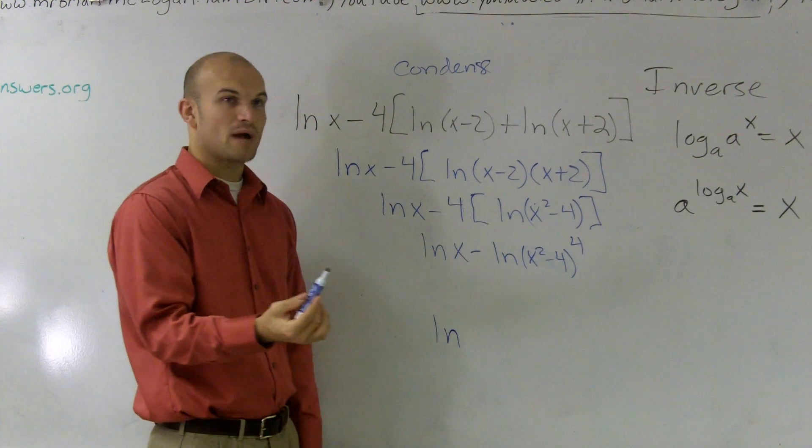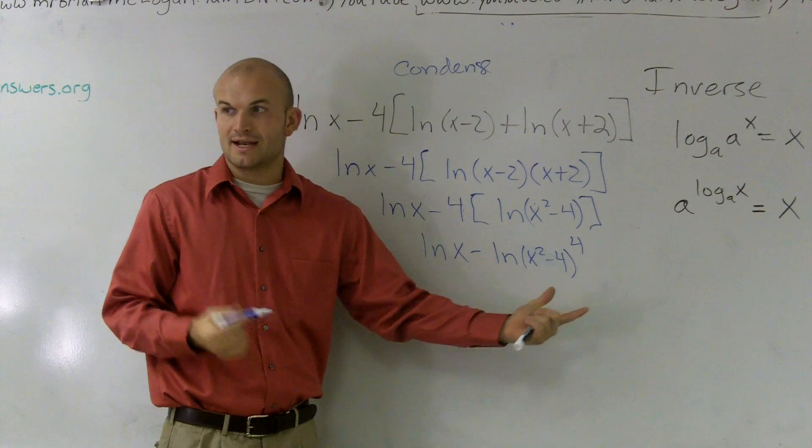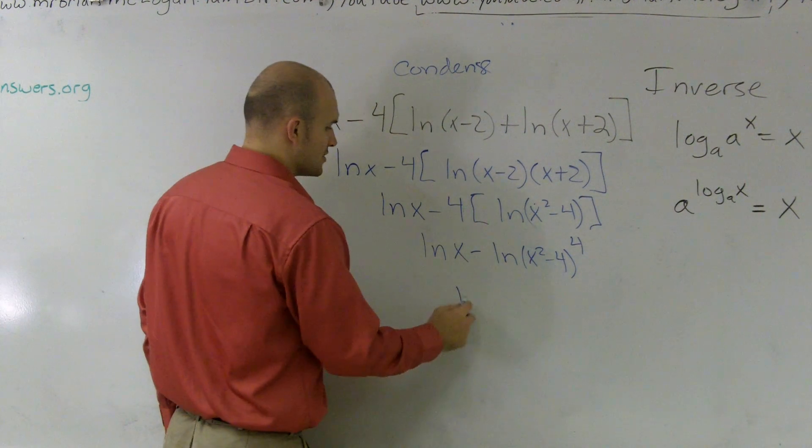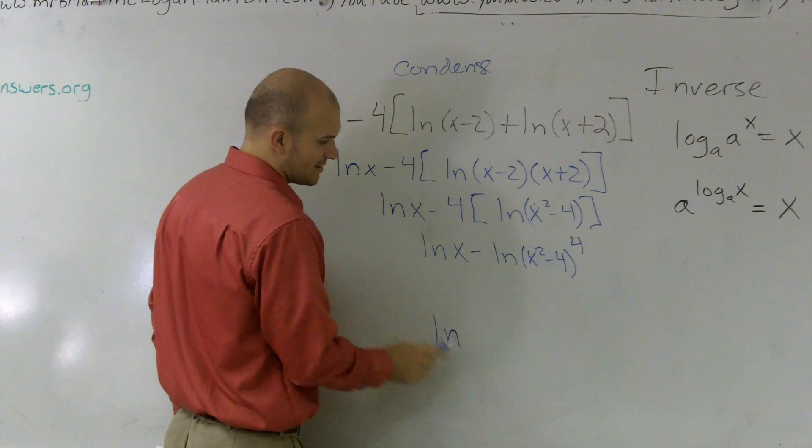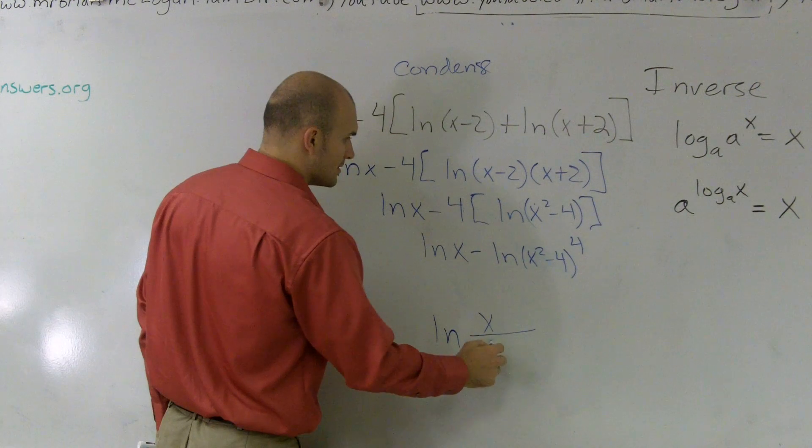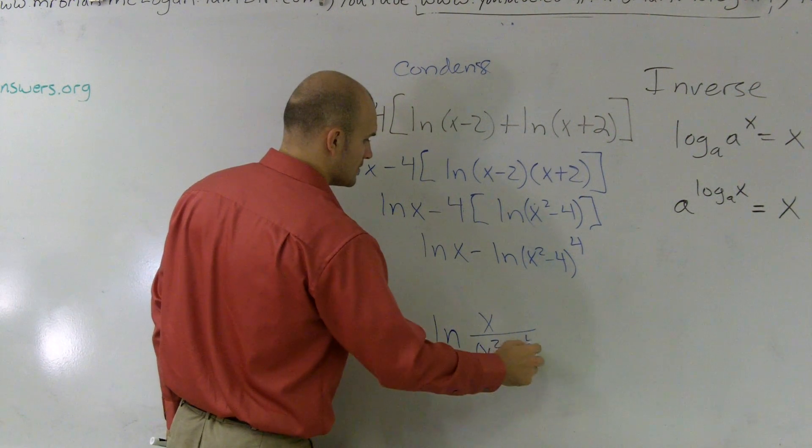Then, on my last properties of logarithms, I know that whenever I have two logarithms subtracted, I can write it as one single logarithm divided. So I can write ln of x divided by (x squared minus 4) to the fourth.